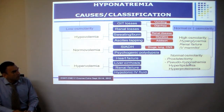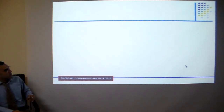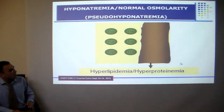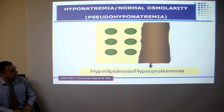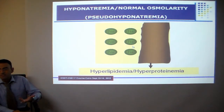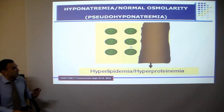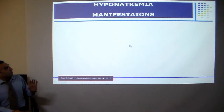There is also pseudohyponatremia, which occurs in hyperlipidemia and hyperproteinemia. In this case, excessive lipids and protein encroach upon the water in plasma, so on determination of serum sodium there will be false hyponatremia. That is why it is called false or pseudohyponatremia.